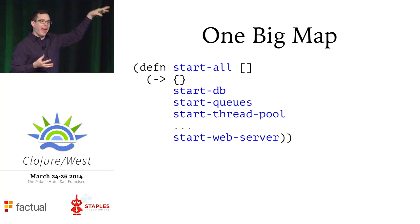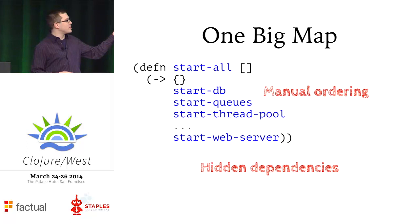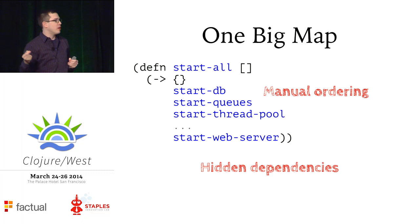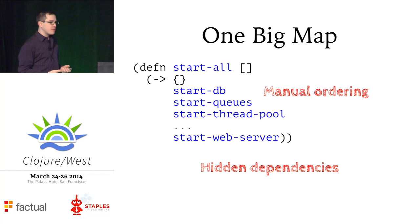Another downside to this pattern is that although it has the nice feature of passing this same map through a bunch of functions to build up the state you need, you still have to keep track of the ordering. There's nothing saying that DB has to come before web server — that's just something you have to remember. You can also have hidden dependencies between these things. I just have to know, because I wrote the code, that one of these functions is going to use some of the state that was created by an earlier function. So it's better, but it doesn't really achieve what I was hoping for.